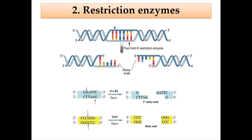Looking at examples: for sticky ends, HindIII cuts at the cleavage site between A and A on both strands in a staggered fashion, producing sticky ends. EcoRI also produces sticky ends because the cutting point on both strands is between G and A — also in a staggered fashion. In contrast, SmaI cuts between C and G on both strands and produces blunt ends.